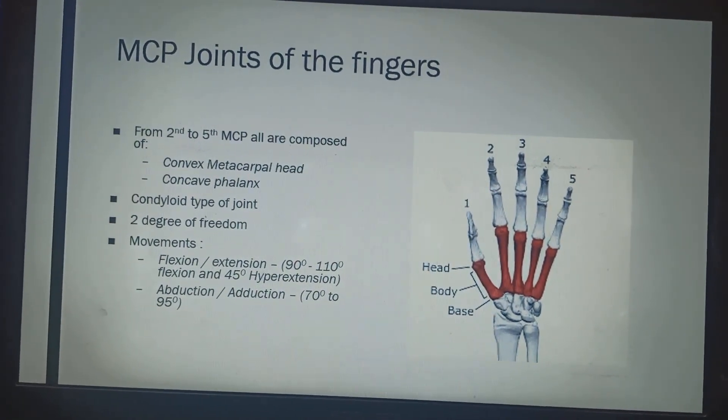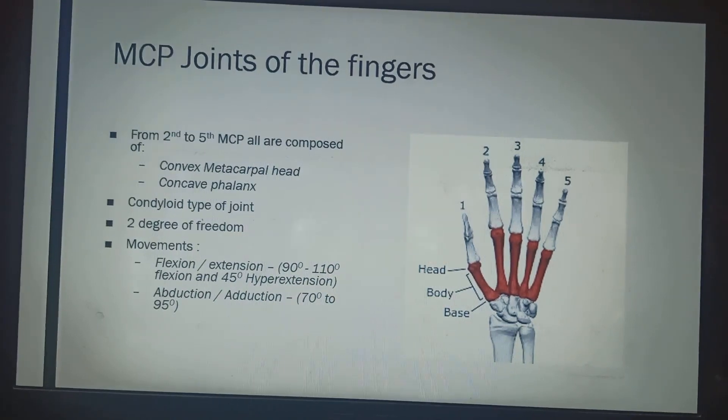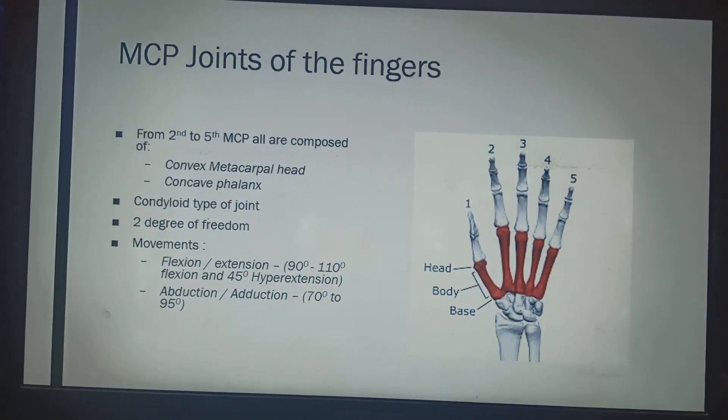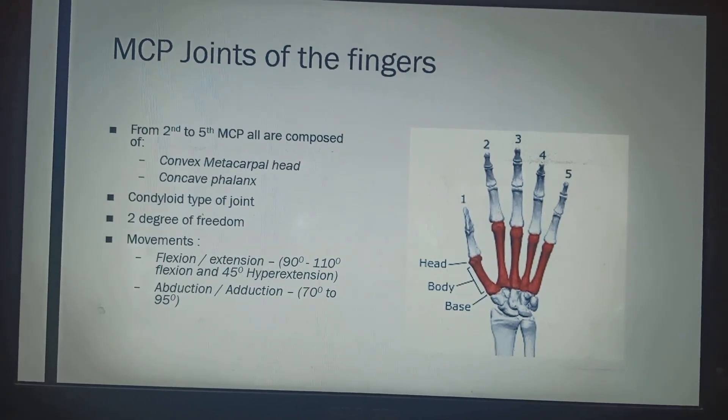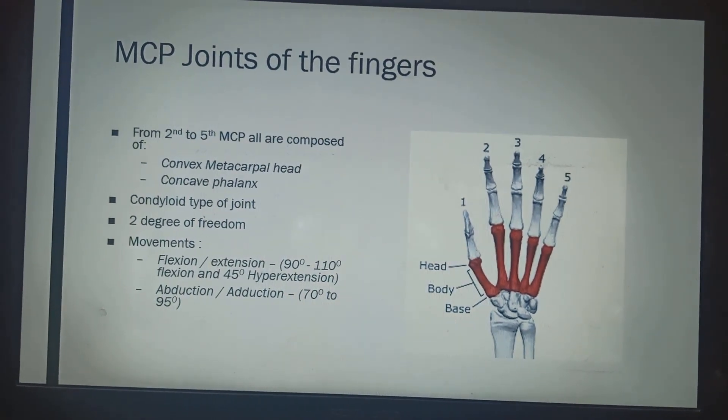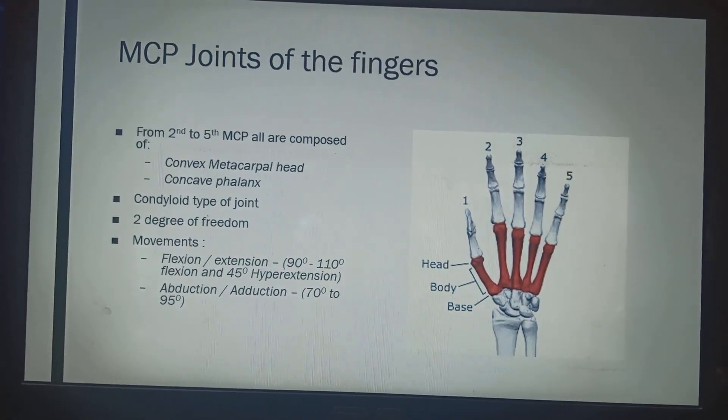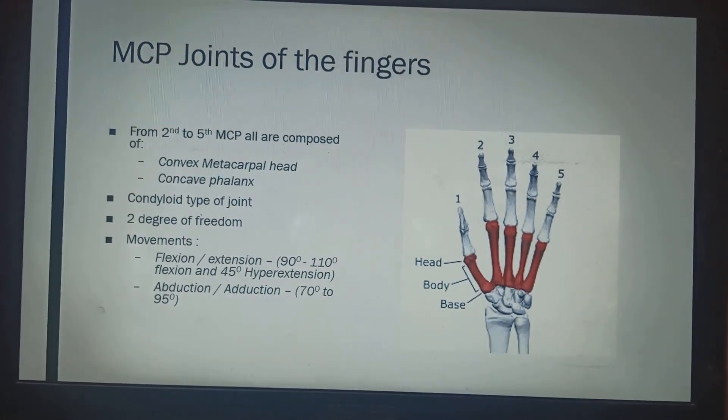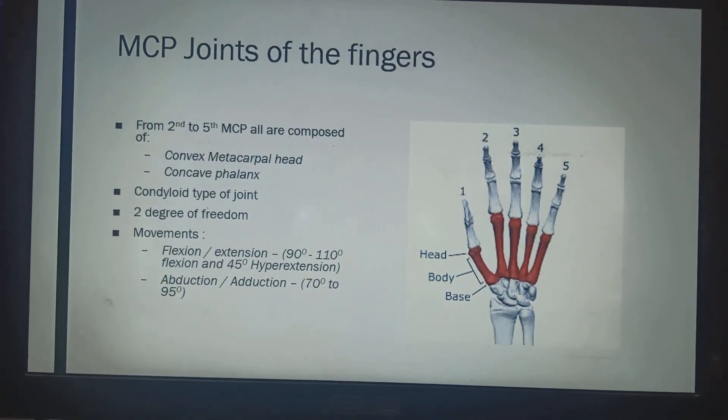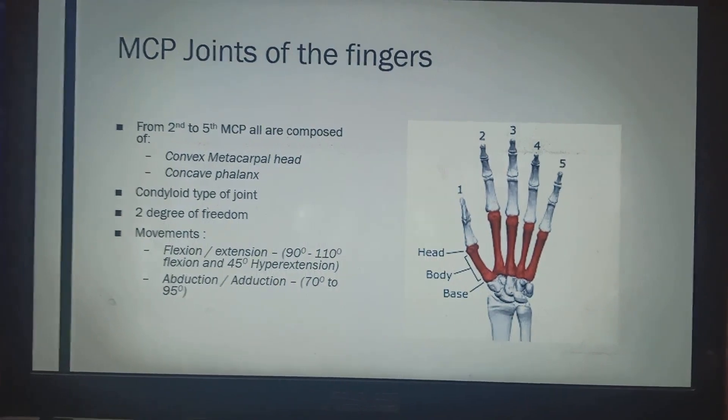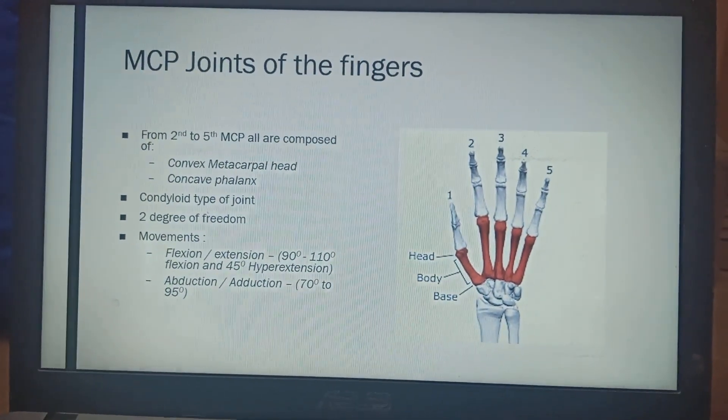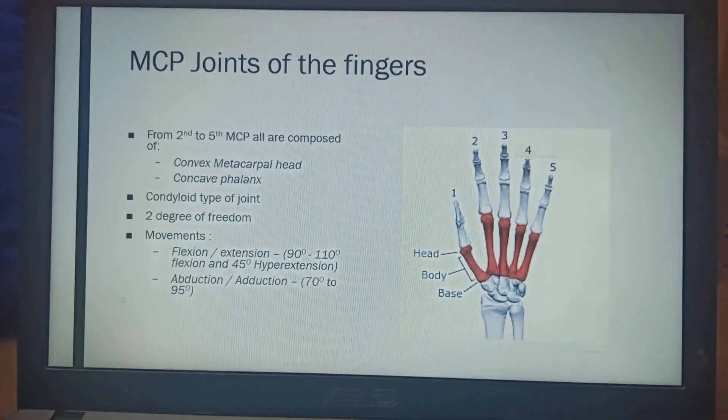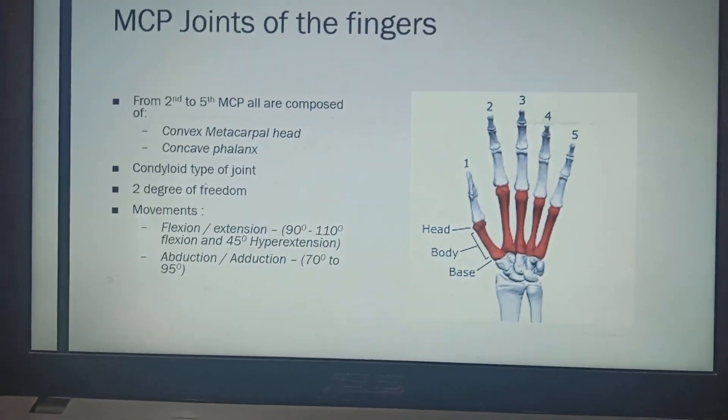2nd to the 5th MCP are all composed of convex metacarpal heads and concave phalanx. That means these are all condyloid type of joints which has 2 degree of freedom. 2 degree of freedom means it has 2 movements: flexion extension and abduction and adduction and I have also shared the range of motion of these joints.